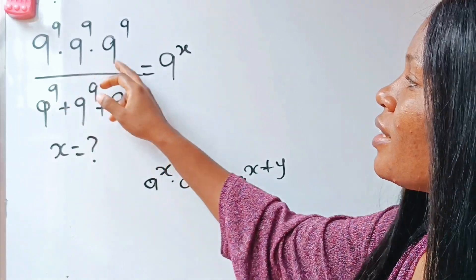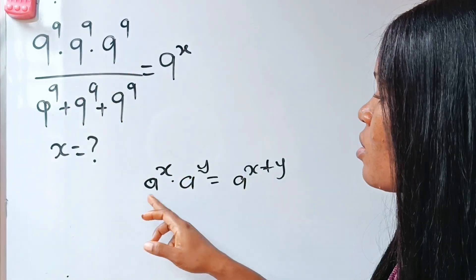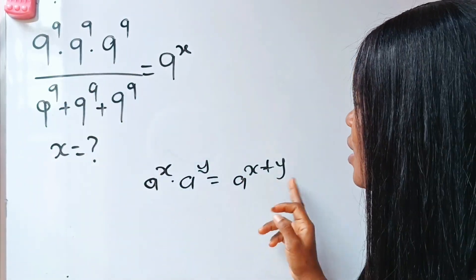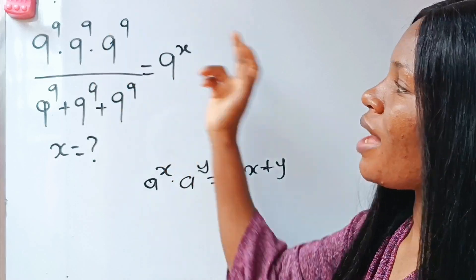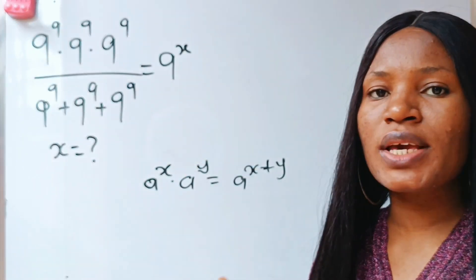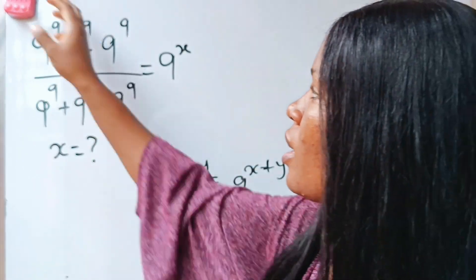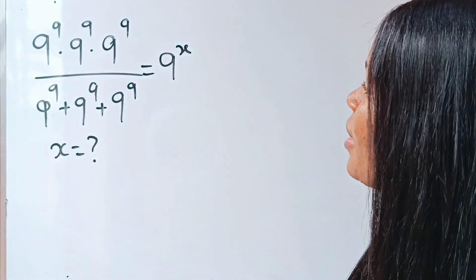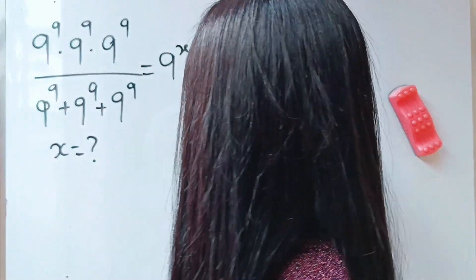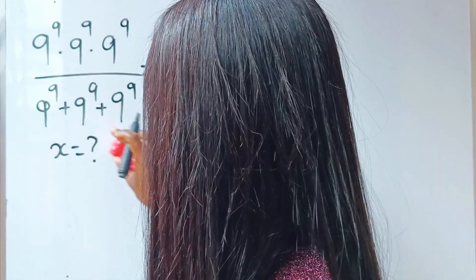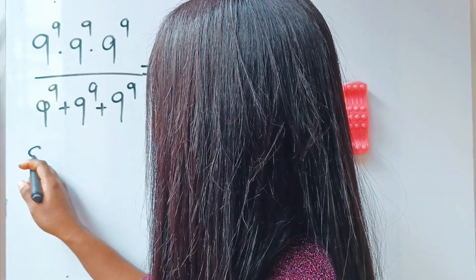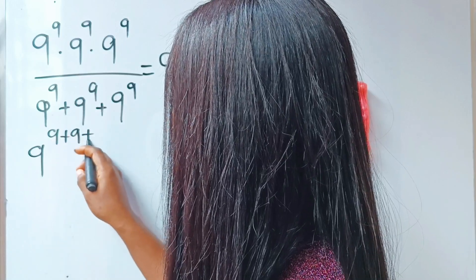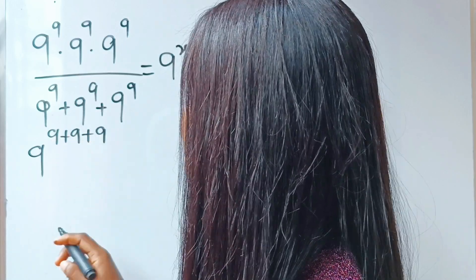In this case we have 9, 9, 9 — the same base. So we just pick one of the bases, just like in this form, and then we are going to add the powers together. So we are going to have 9, we pick one 9, and we are going to add the three powers together.